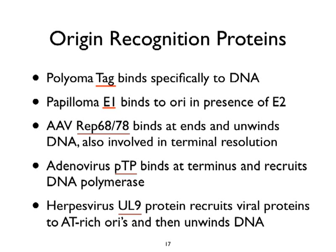All Polyomaviridae encode a protein called T-antigen — originally standing for transformation or tumor antigen because bits of it were presented on the surface of tumor cells. It's a rather large protein of 708 amino acids. Carol Purvis in the biology department here has done elegant work on the biochemistry of this molecule. Papillomaviruses encode a DNA binding protein called E1, but it doesn't bind to the origin by itself.